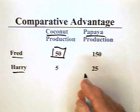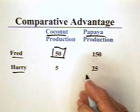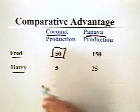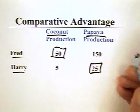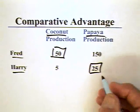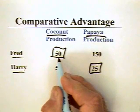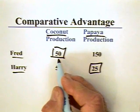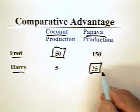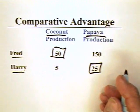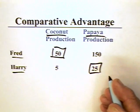Fred's relatively greater productivity comes in the production of coconuts. By the same token, Harry has a relatively greater productivity when compared with Fred. Harry is only one-tenth as productive in coconuts, but one-sixth as productive in papayas. Harry's relatively greater production capability lies in papayas. David Ricardo basically said that if these two parties each produce the good in which they have a comparatively greater production advantage, then trade is mutually beneficial. If Fred produces coconuts and Harry produces papayas, then trade can be mutually beneficial, because the cost of producing coconuts is lower for Fred, and the cost of producing papayas is lower for Harry.